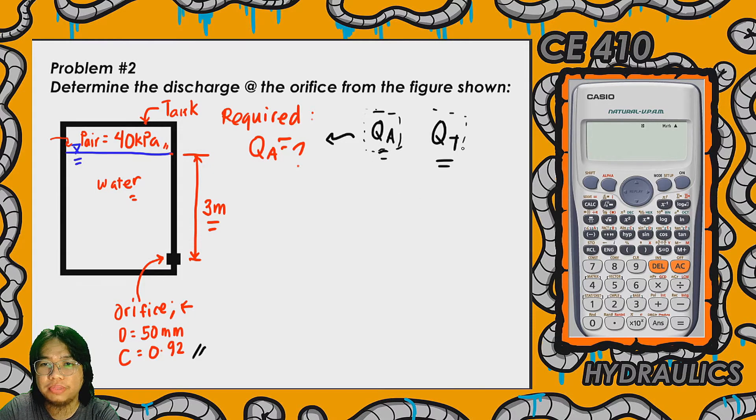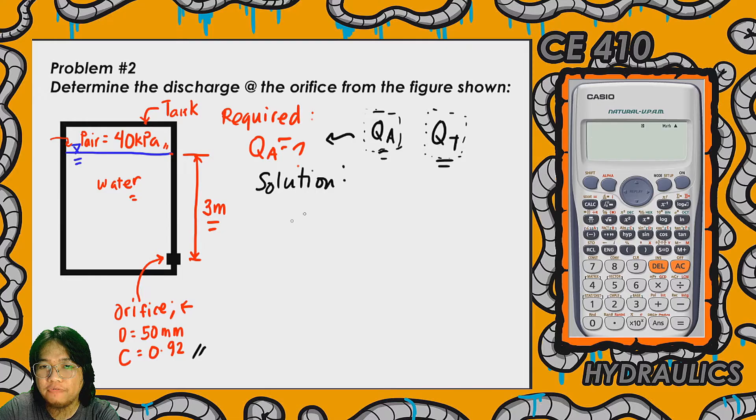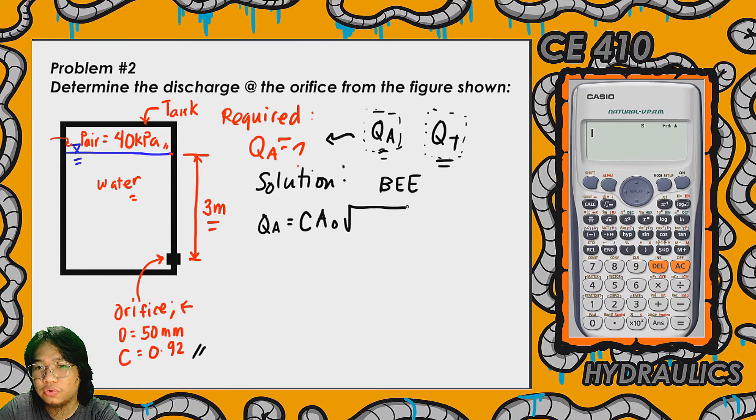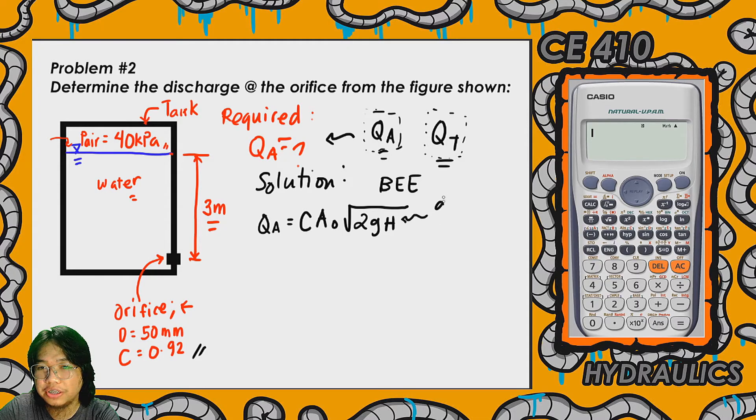If the system is ideal, then we can compute for Q sub t. So our solution for this—we can use Bernoulli's energy equation or we can use the derived formula. Our derived formula is Q sub a or actual discharge is equal to C or the coefficient of discharge times A sub o or the cross-sectional area of the opening of the orifice times the square root of 2g uppercase H. Remember that the value of uppercase H depends on the existing energy that will trigger the discharge at the orifice.